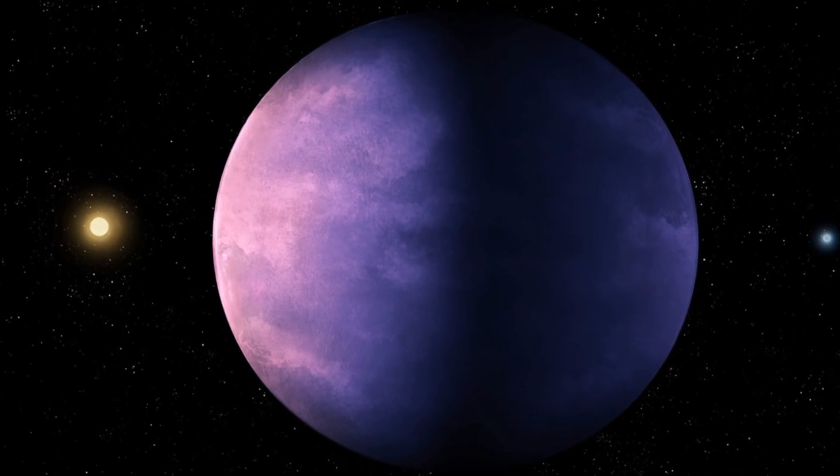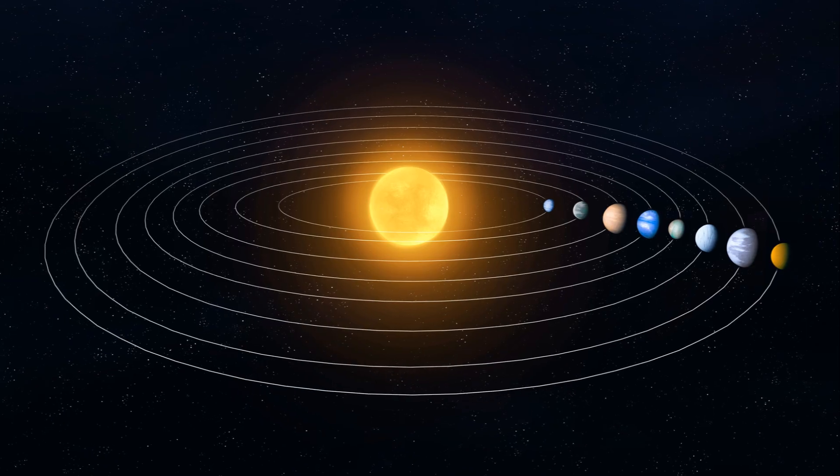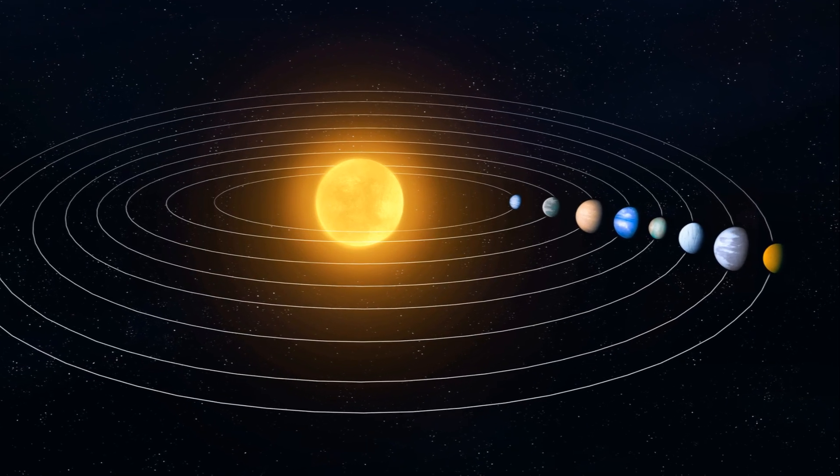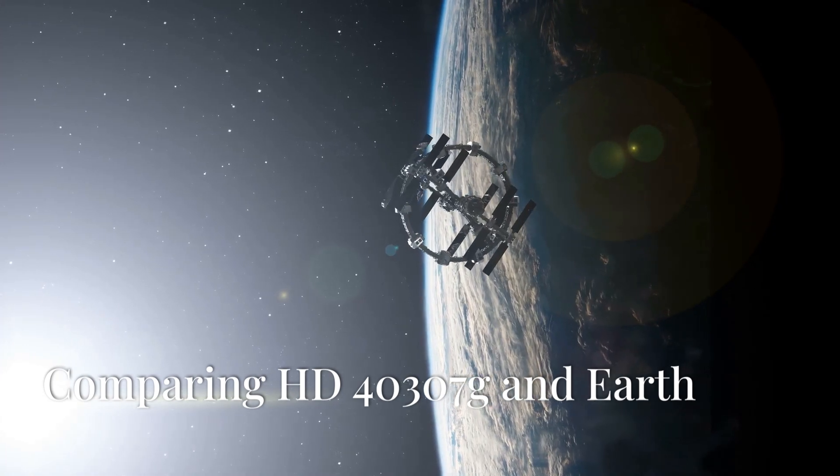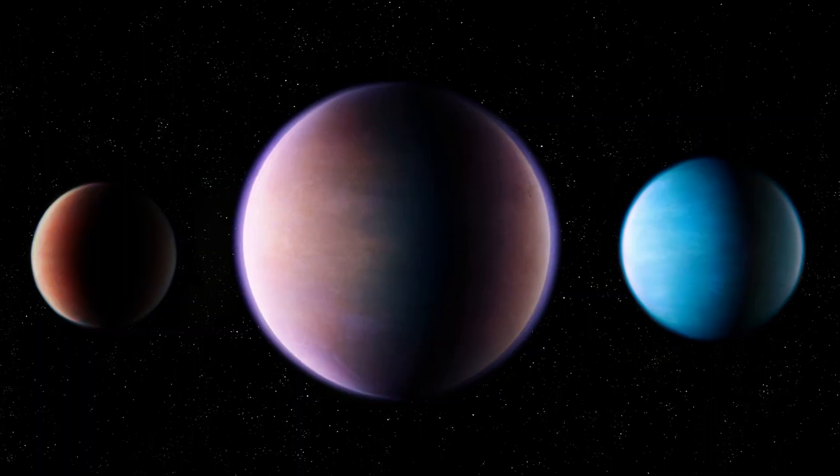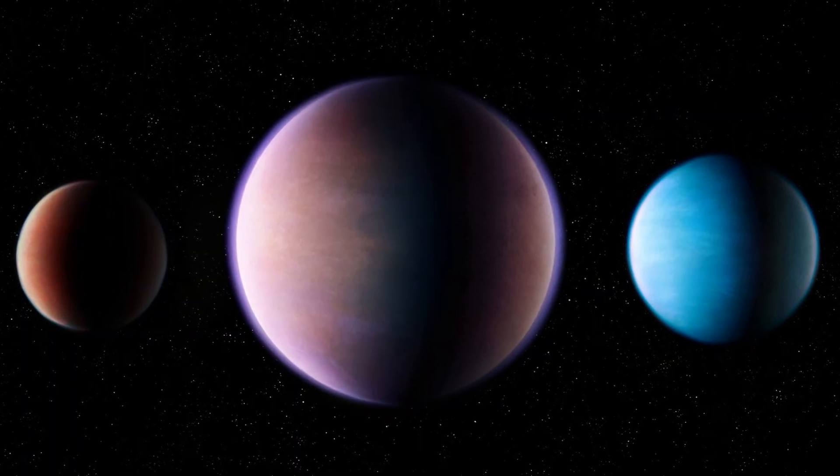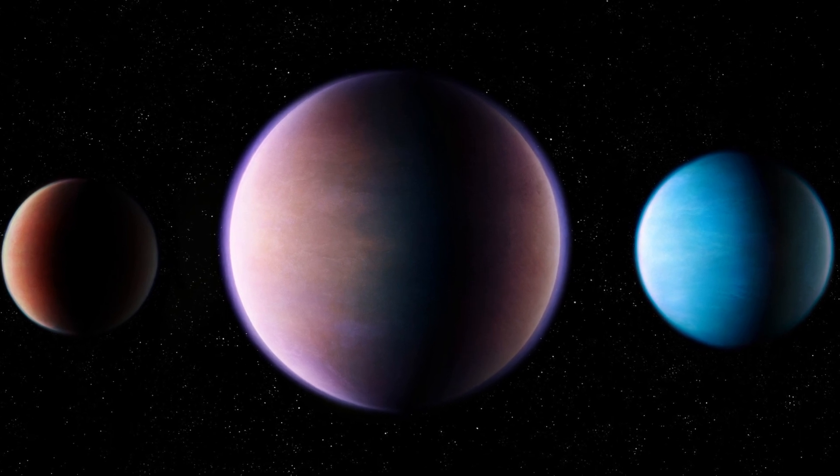By combining this information, scientists can begin to piece together a picture of what these distant worlds might be like. A distant cousin, comparing HD 40307 G and Earth.